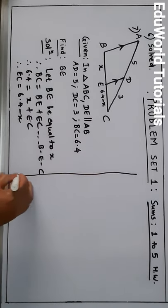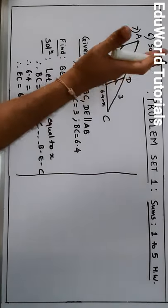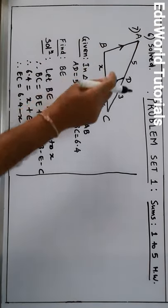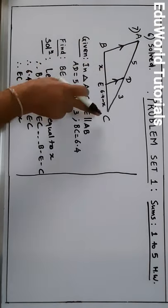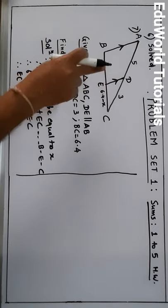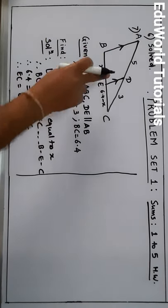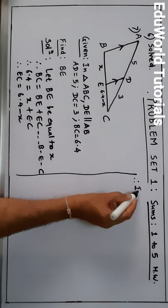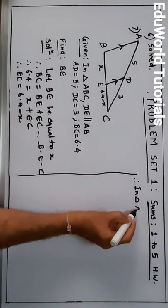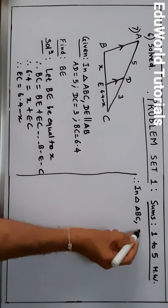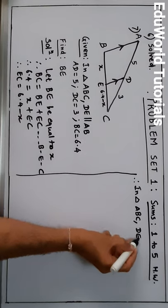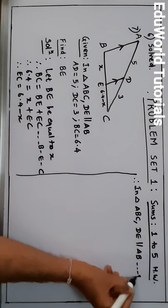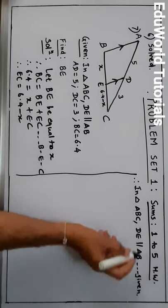Now, you know that in a triangle, one line is parallel to a side of the triangle and that line divides the two sides at distinct points. That means we have to apply the basic proportionality theorem. Therefore, in triangle ABC, DE is parallel to side AB — this is given — so we apply the basic proportionality theorem.